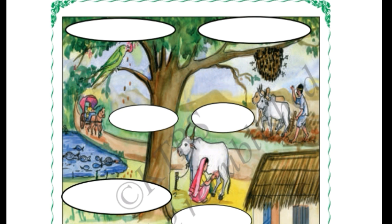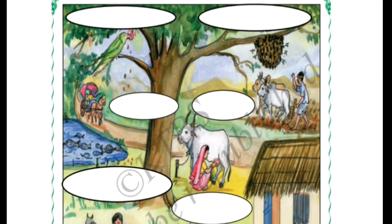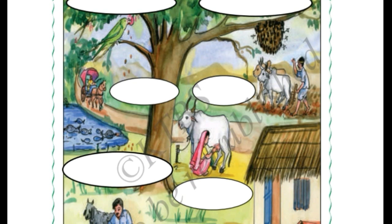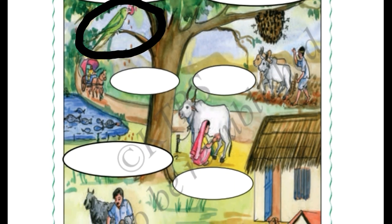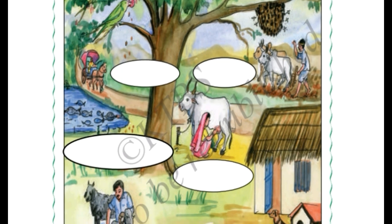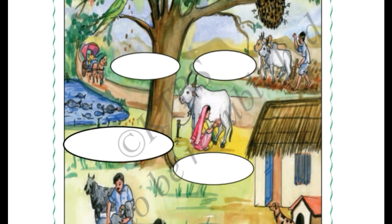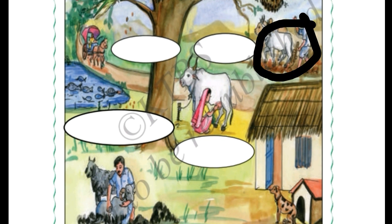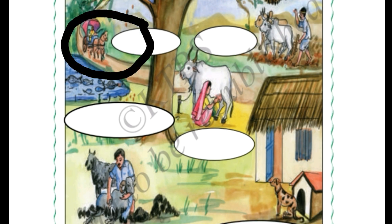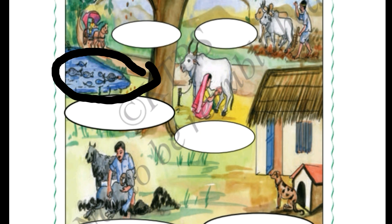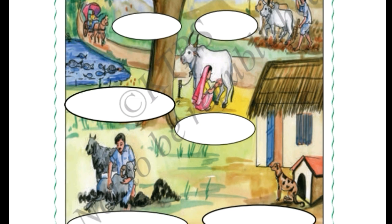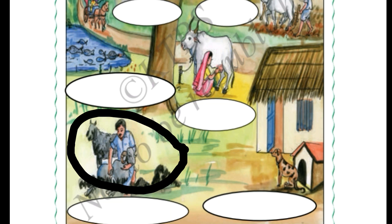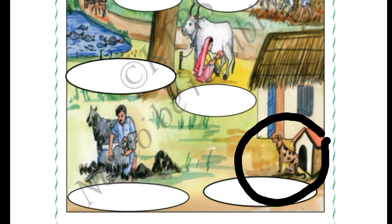The pictures shown here show how animals are useful to us. Birds eat worms and keep the environment clean. Honeybee gives us honey. Ox helps in plowing the field. Horses are used in horse carriages. Fishers eat insects in water and keep the water clean. Cow gives us milk. Sheep gives us wool. Dog guards our house. These are the different types of uses of animals.